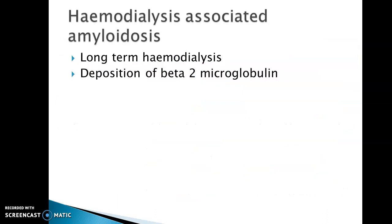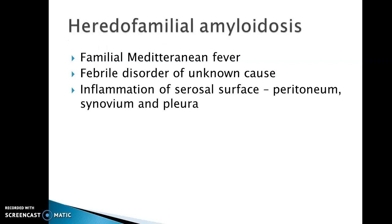Other types include hemodialysis associated amyloidosis, seen in long-term hemodialysis due to deposition of beta-2 microglobulin. Heredofamilial amyloidosis is seen in familial Mediterranean fever, a febrile disorder of unknown cause resulting in inflammation of serous surfaces including peritoneum, synovium, and pleura.